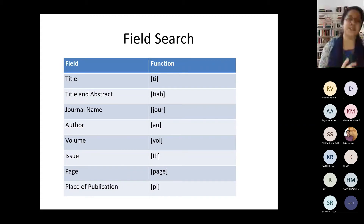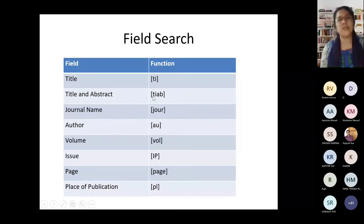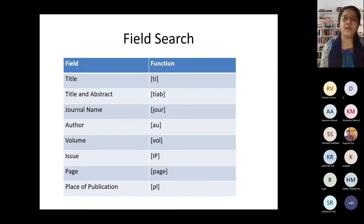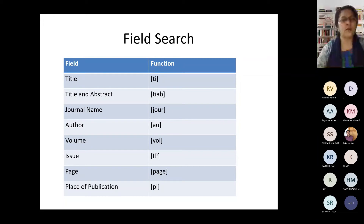There's another thing known as field search. By field search we mean: if you want something in the title, type it in square brackets as [TI]; if you want it in title and abstract, use [TIAB]; if you want to search by journal name, use [JOU]; and if you want to search a particular author, use [AU] in square brackets. You are putting it in square brackets and accordingly you can search even the author or the journal name or whatever you want.